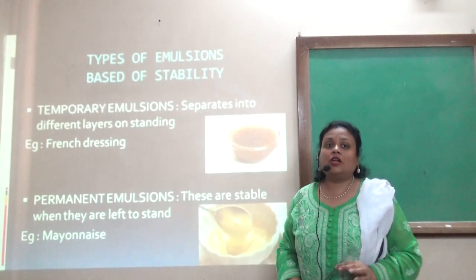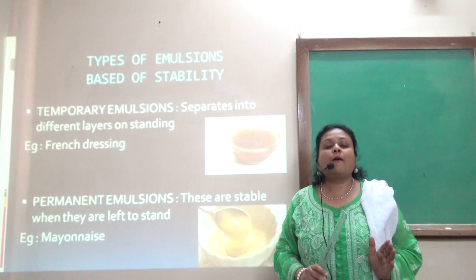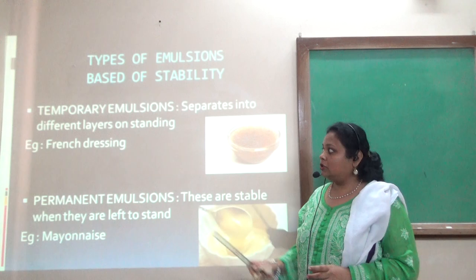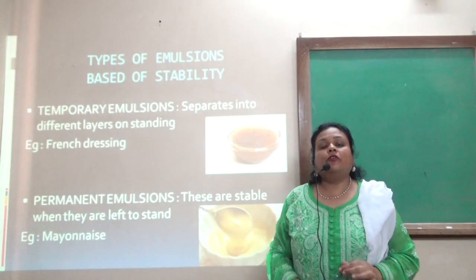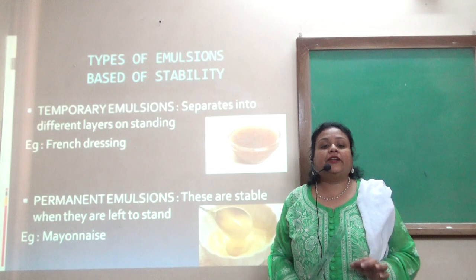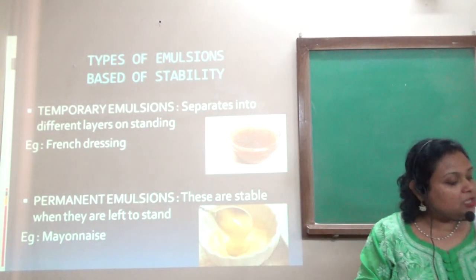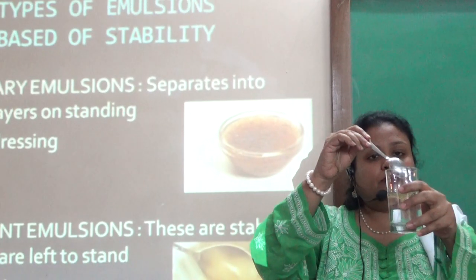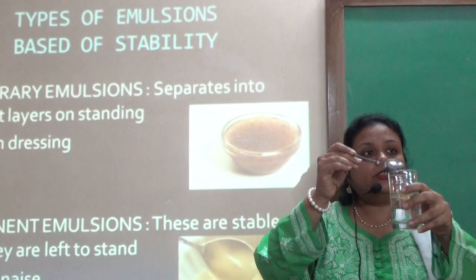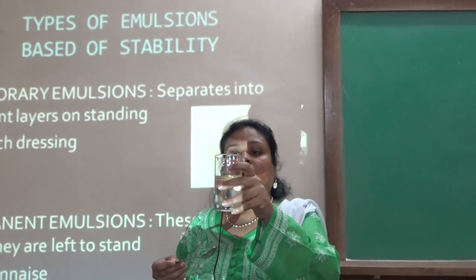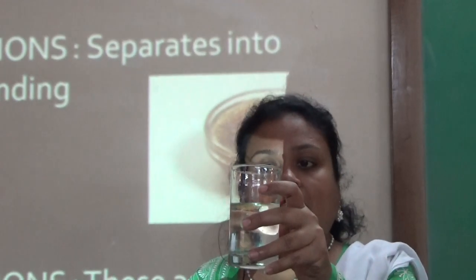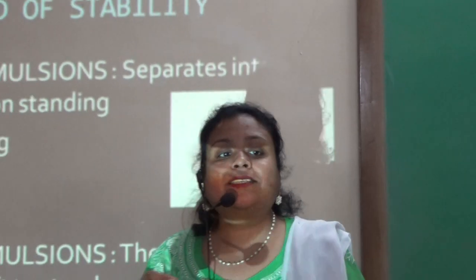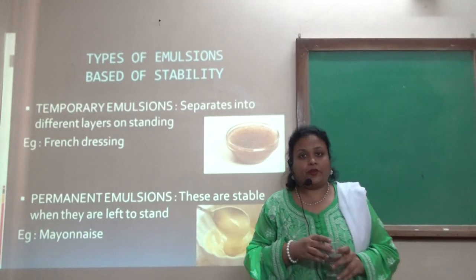Types of emulsions based on stability. There are two types. One is a temporary emulsion, where it separates into different layers on standing. For example, with oil and water — when you agitate it, you find it becomes miscible, but after some time on standing, you find the oil particles separate again. This is said to be a temporary emulsion. Example: French dressing.